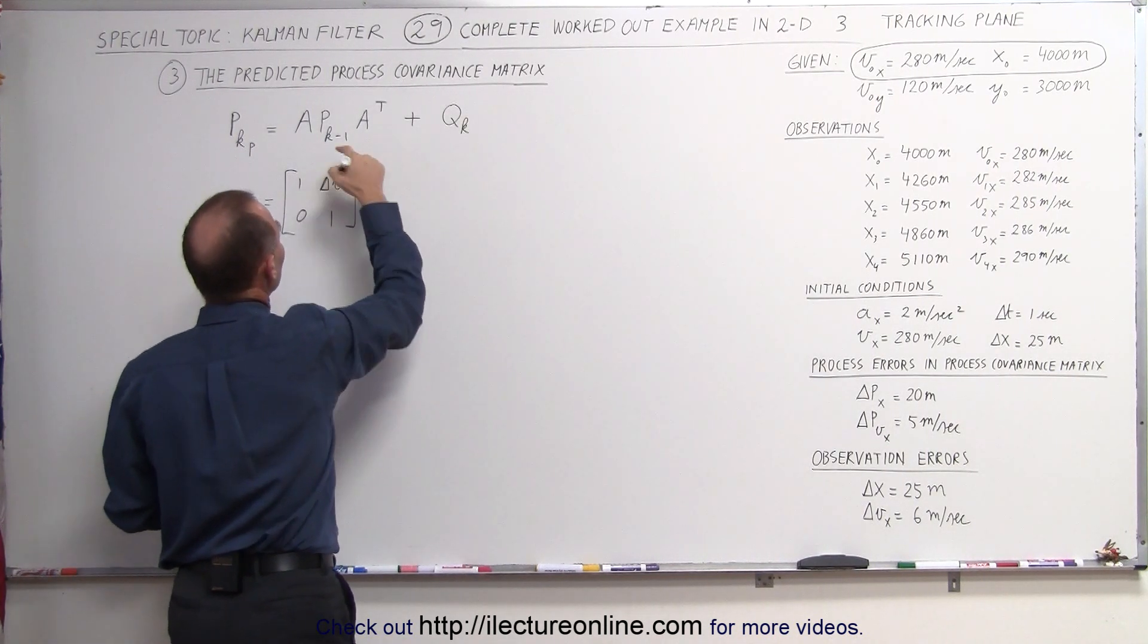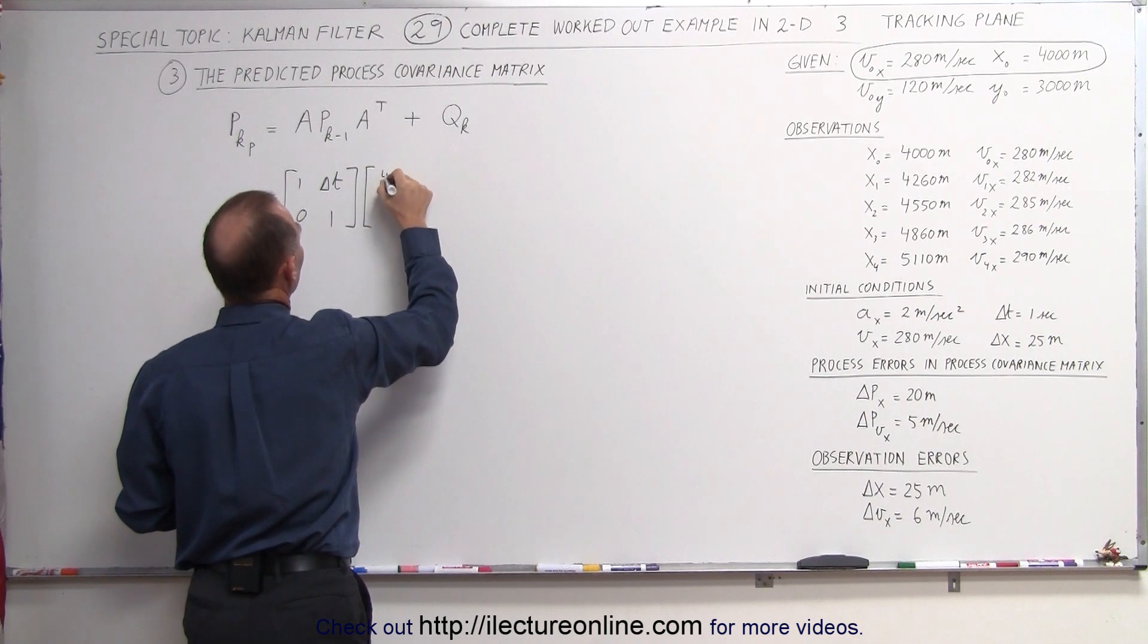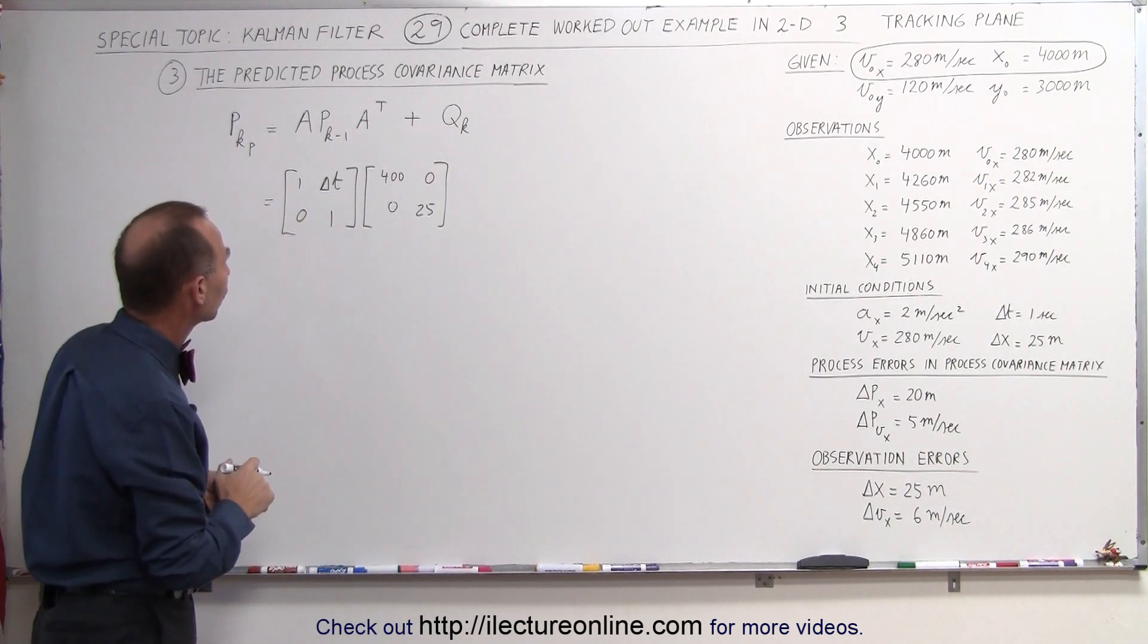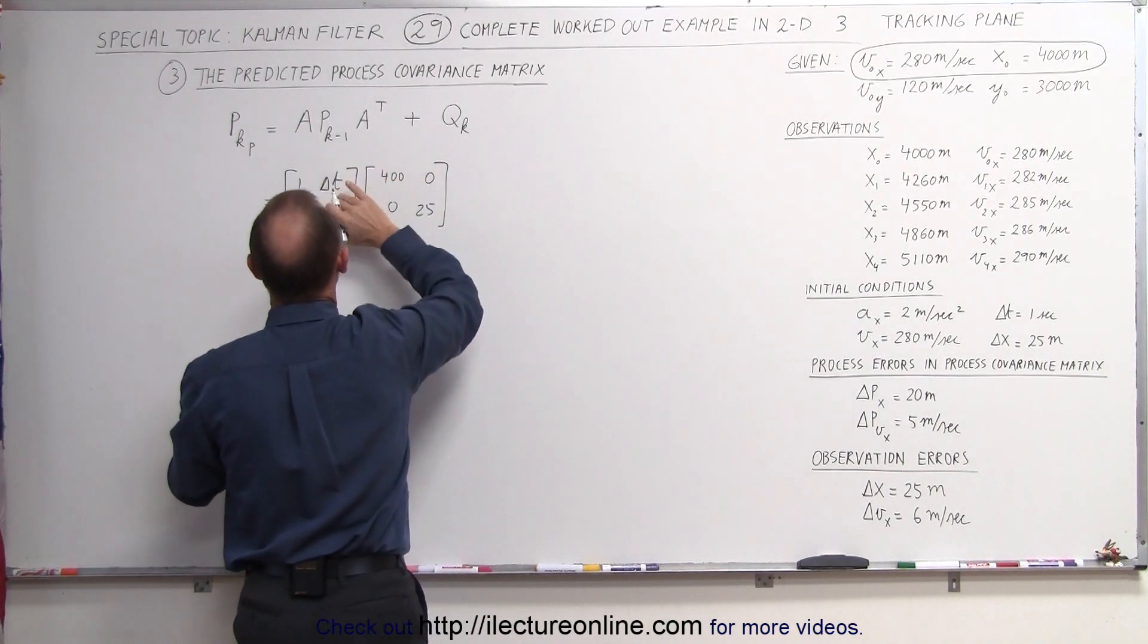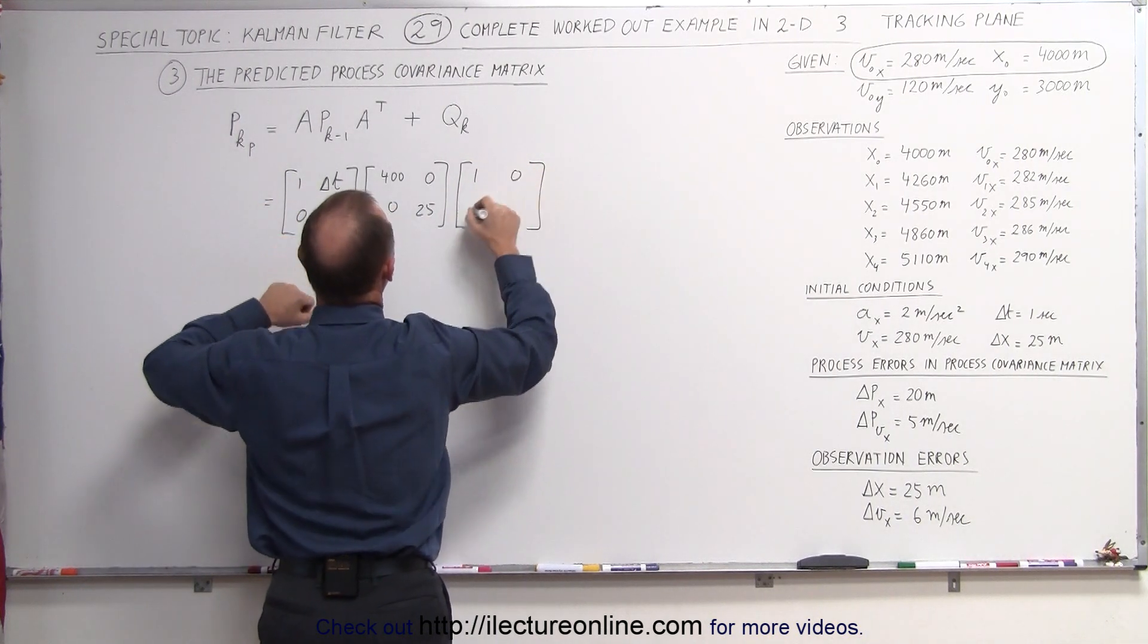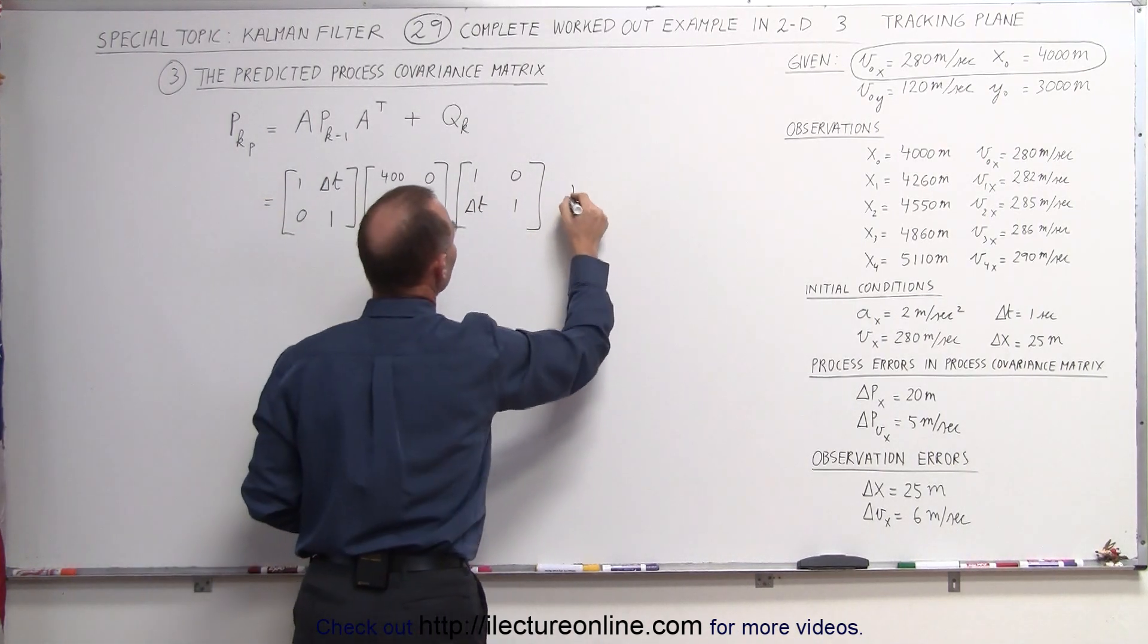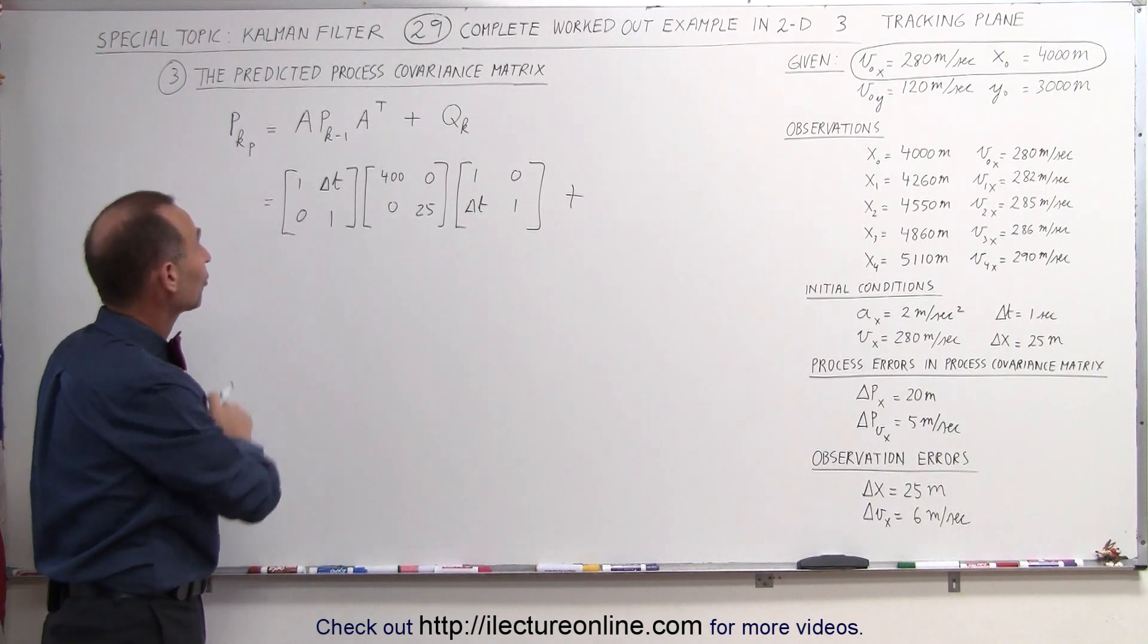Times the previous matrix, and the previous matrix was like this. It had 425, 0, and 0, because we had eliminated the cross covariance terms, and then we have to multiply this times the transpose of this. When we transpose that matrix, we get 1 and 0, we have delta T and 1 over here. So that's the transpose of this matrix.